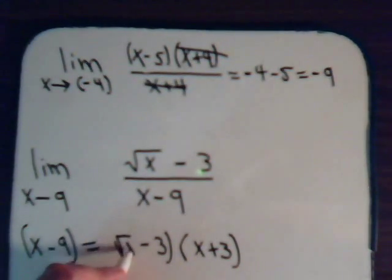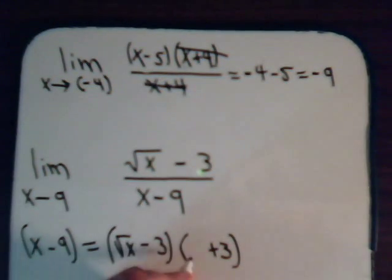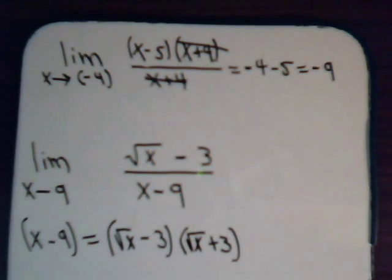We'll have square root of x. And over here, let's see. This is x squared. Excuse me. This is the square root of x times the square root of x is x, not x squared. We have minus 3 square root of x plus 3 square root of x.